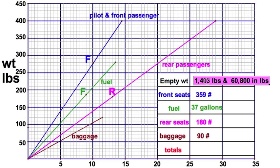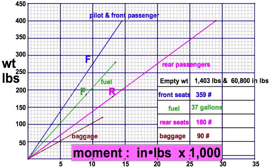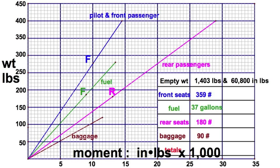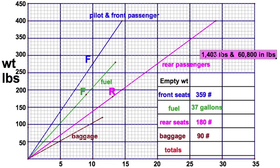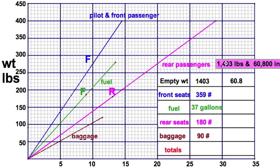First thing I'm going to do is address the axes: I've got pounds on the vertical axis, but I'm going to be using the horizontal axis for moment — that's inch-pounds times 1,000. On this scale, this is 15,000 inch-pounds and this is 20,000 inch-pounds. I'm still going to call this 1,403, but I'll call this 60.8 because it represents 60.8 thousands of inch-pounds. A lot of students make a mistake on that one, so just make sure you get that done right away.